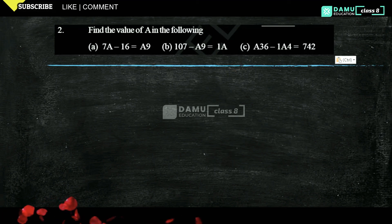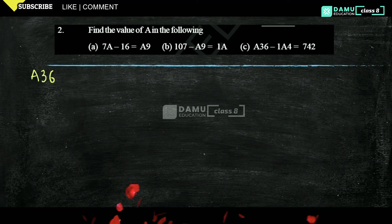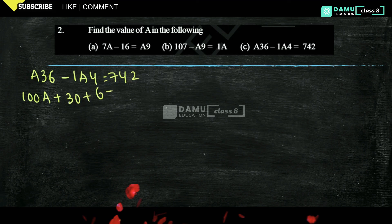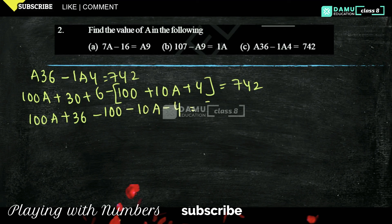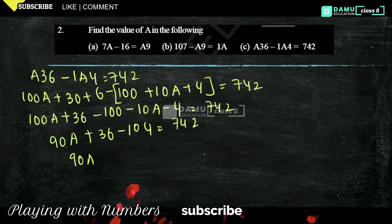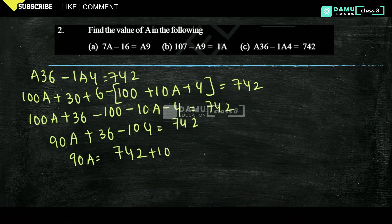So from this, if you calculate A: A36 minus 1A4 equals 742. We will write it in expanded form. That is 100A plus 30 plus 6, minus 100 plus 10A plus 4, equals 742. So 100A plus 36 minus 100 minus 10A minus 4 equals 742.